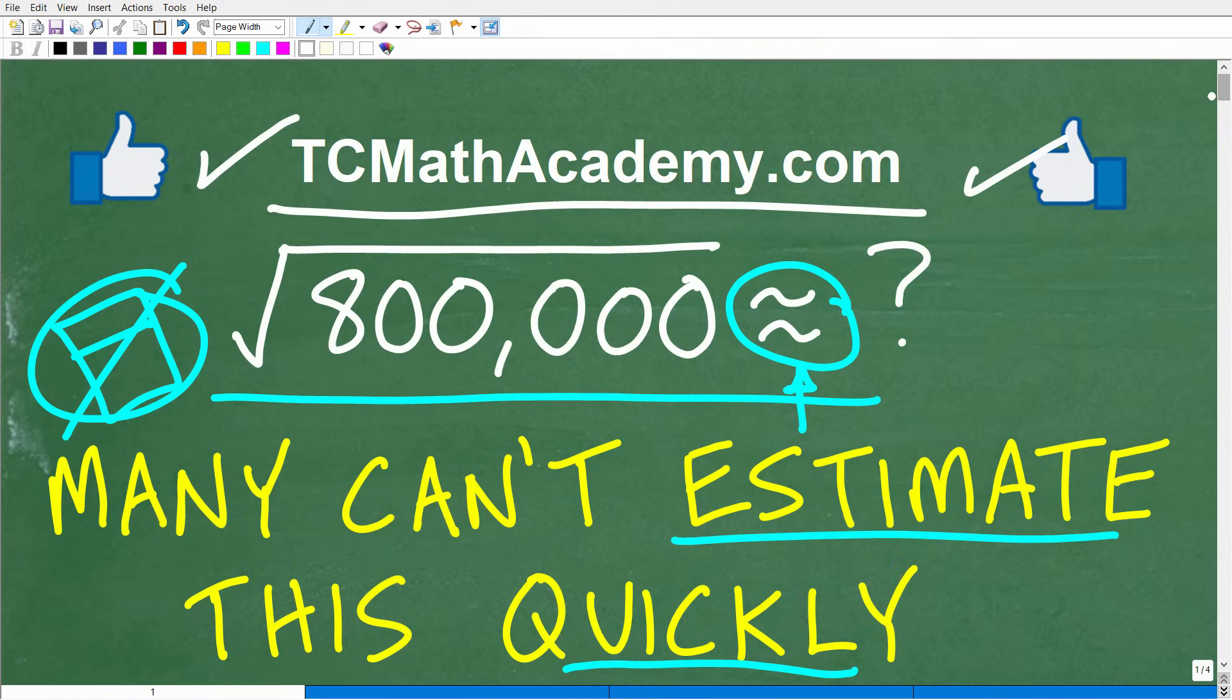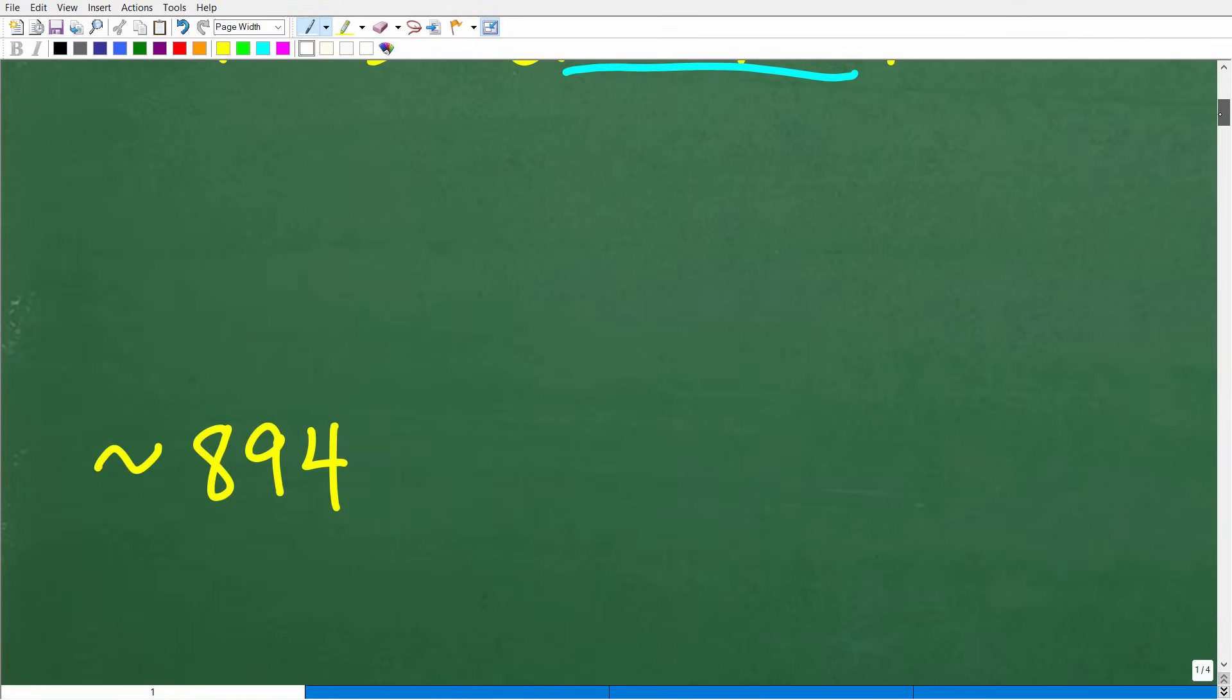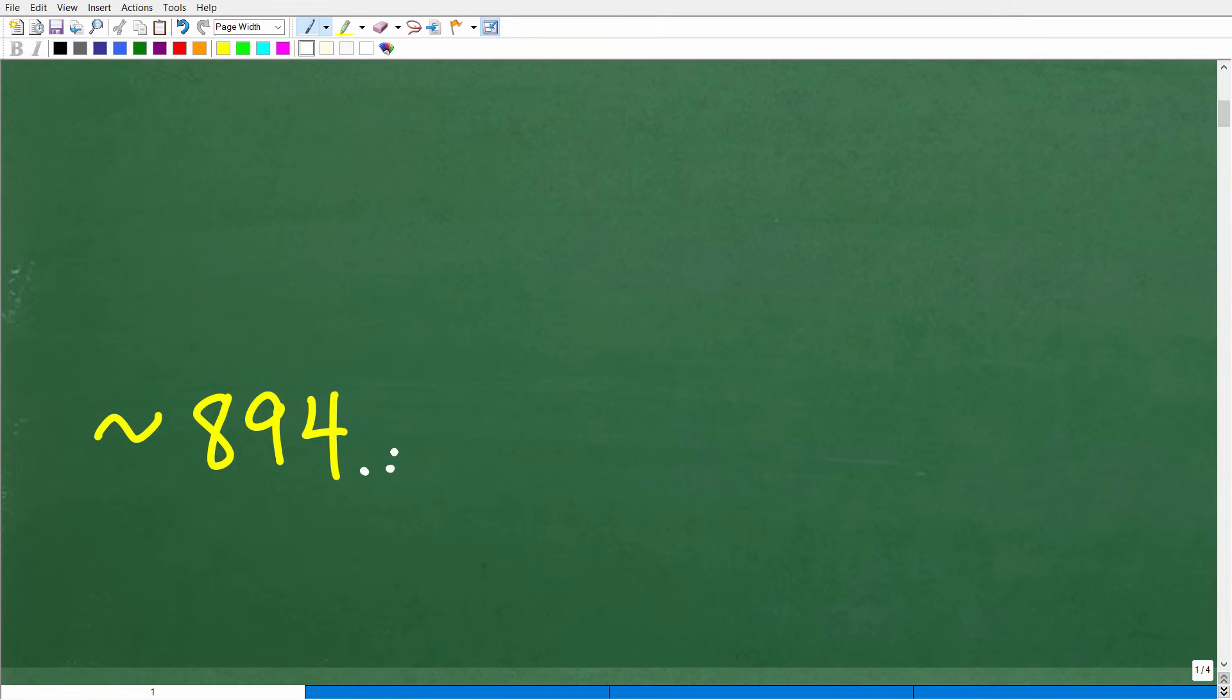Now let's take a look at the answer. The square root of 800,000, if you were to put that into your calculator, this is pretty much the answer you would get. You would get 894, and of course I rounded this off. But this is a pretty accurate estimation for the answer, for the square root of 800,000.